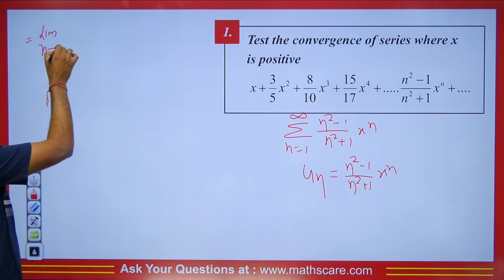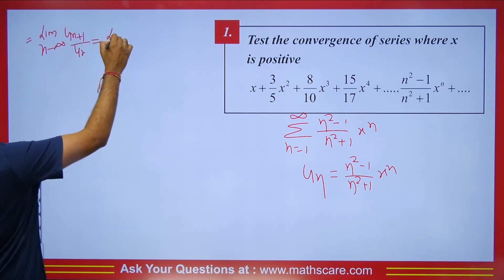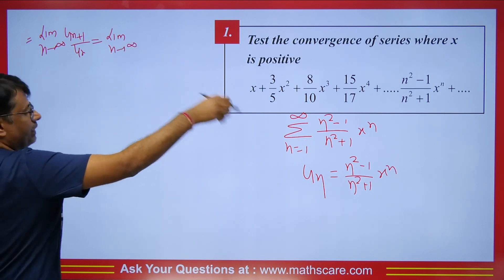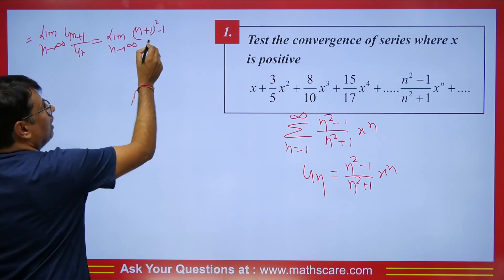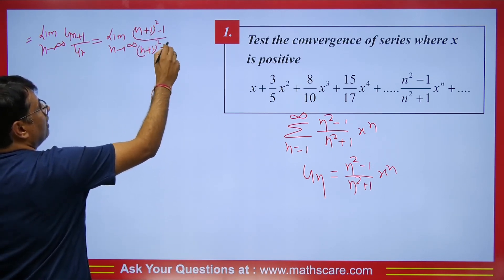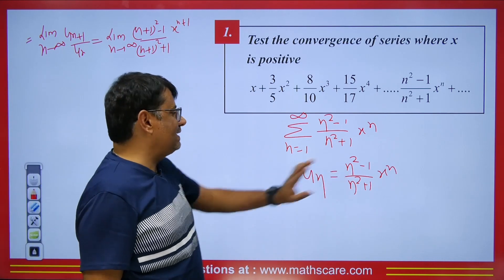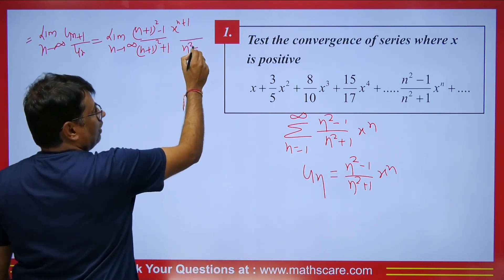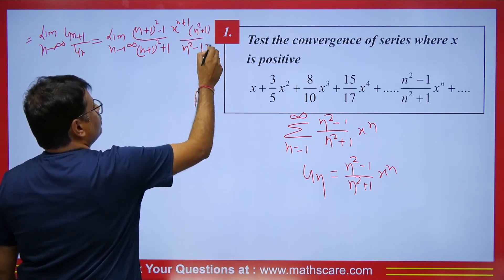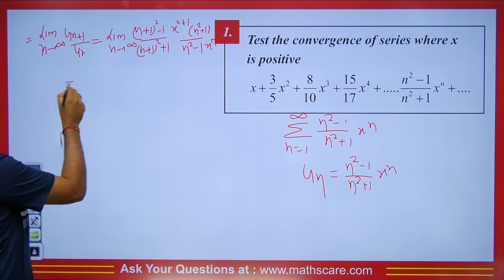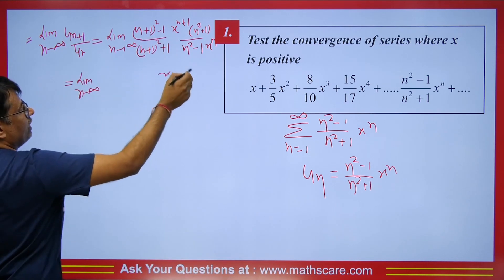We have limit n tends to infinity of u_{n+1} upon u_n. So u_{n+1} is [(n+1)²-1]/[(n+1)²+1] × x^(n+1). Dividing by u_n = (n²-1)/(n²+1) × x^n, we bring (n²+1) to the numerator. The x^n terms cancel, leaving a factor of x.